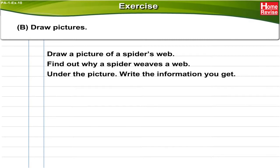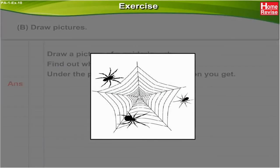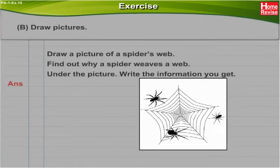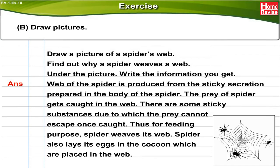Draw pictures: Draw a picture of a spider's web and find out why a spider weaves a web. Under the picture, write the information you get. A spider's web is produced from the sticky secretion prepared in the body of the spider. The prey of the spider gets caught in the web — there are sticky substances due to which the prey cannot escape once caught. Thus, for feeding purposes, the spider weaves its web. The spider also lays its eggs in a cocoon, which is placed in the web.